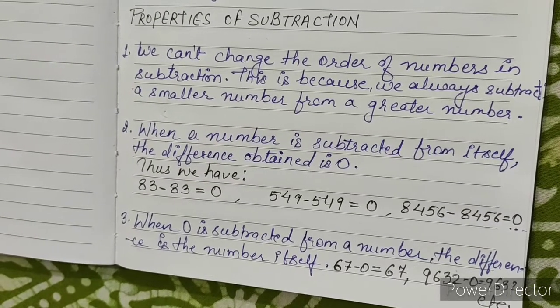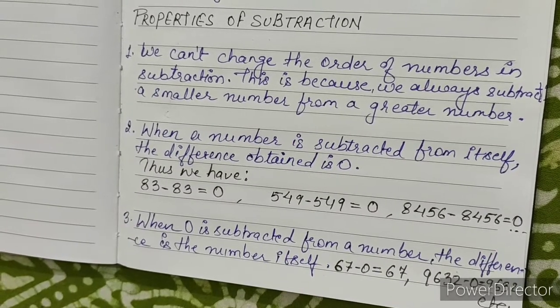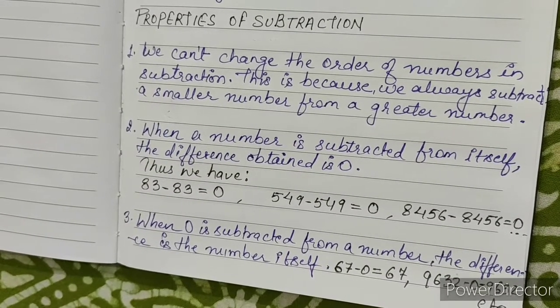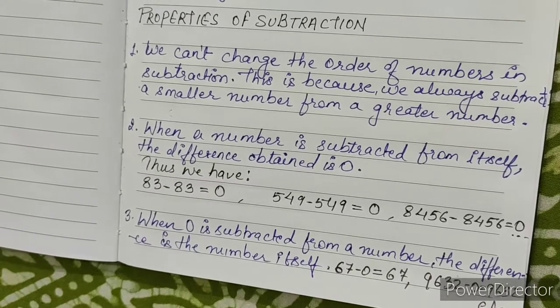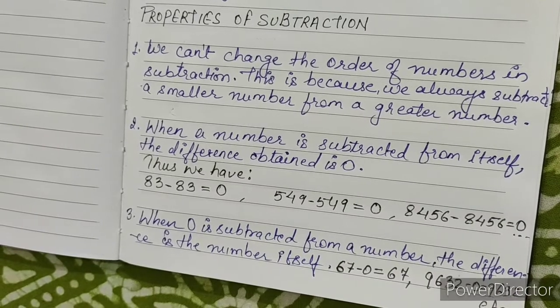Property 1: We can't change the order of numbers in subtraction. This is because we always subtract a smaller number from a greater number.